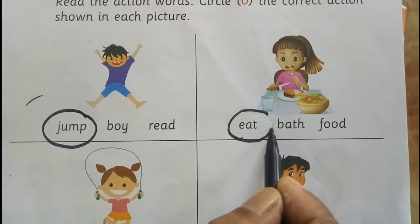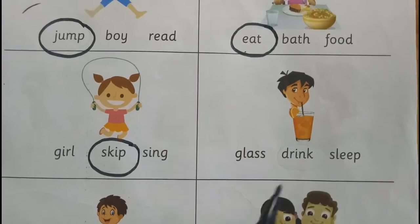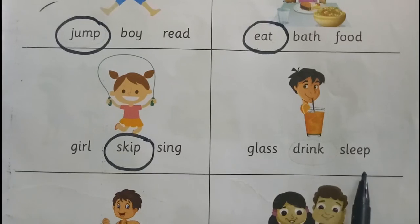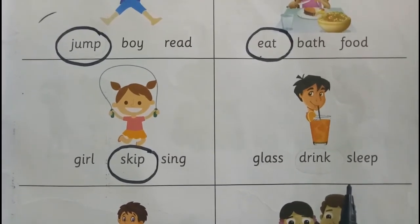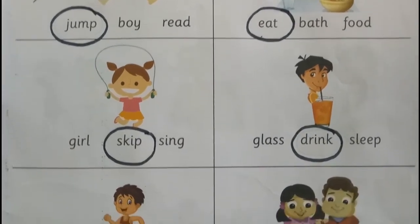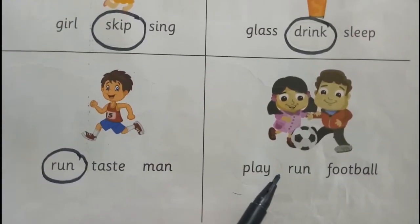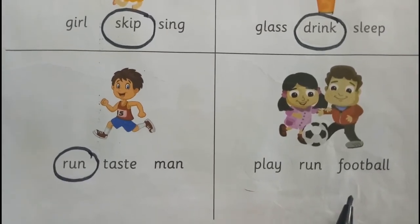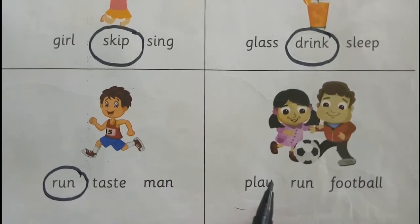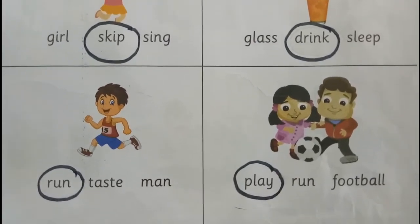So you have to circle eat. And here, what is this boy doing? They have given a glass — drink or sleep, which one will you choose? Yes, you are correct — drink! So you have to circle drink. And here these kids — they have given a football. Is running the correct answer? No. The answer is play — they are playing. So you have to circle play. Like this you have to do this exercise.